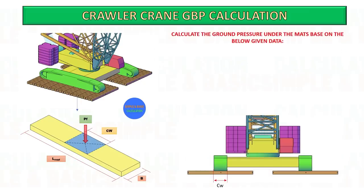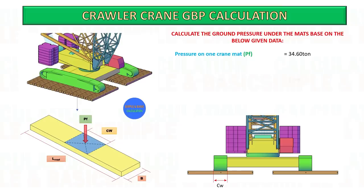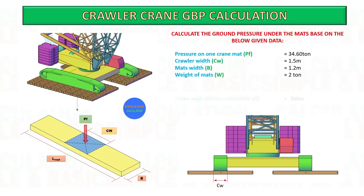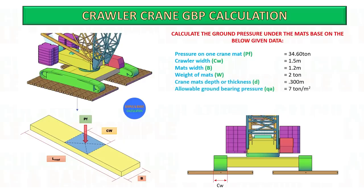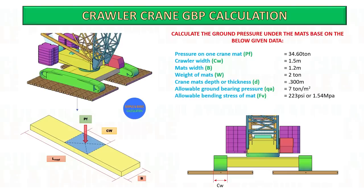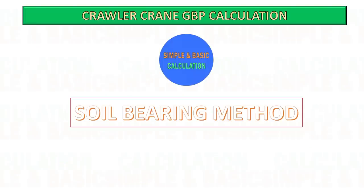After getting the point load on one crane mat, here are the other data we need for our calculation: crawler track width is 1.5 meter, mat width is 1.2 meter, weight of each mat is 2 ton, the allowable ground bearing pressure on site is 7 ton per meter squared, and shear and bending stress of the mats.